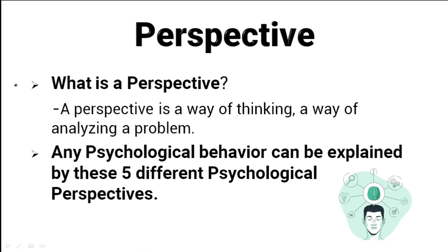A perspective is a way of thinking — a way of analyzing a problem. Let's take a model behavior and try to see what these perspectives are. Let's say there is an event: a boy gets angry and hits someone. This act of hitting someone, which is a behavior, and the act of getting angry, which is a psychological state — this behavior can be explained by psychological perspectives.